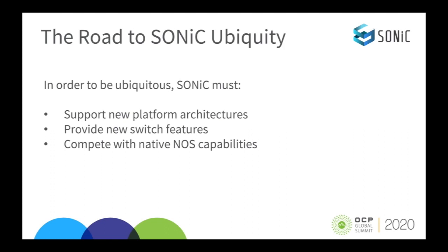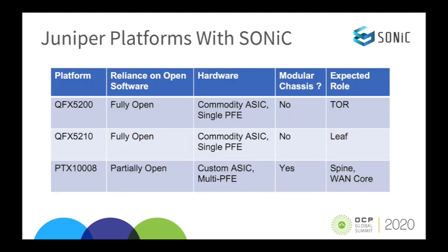Sonic must also compete with native NOS. Juniper has three platforms that run Sonic: the QFX5200, which we see as a ToR; the QFX5210, which we see as a Leaf; and the PTX-1008, a modular chassis that we see in the spine or WAN core roles. The QFX5200 and 5210 have Broadcom ASICs. The PTX-1008 has a custom ASIC called the BT.